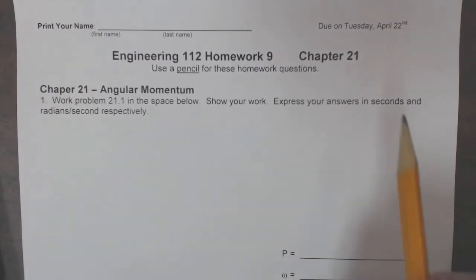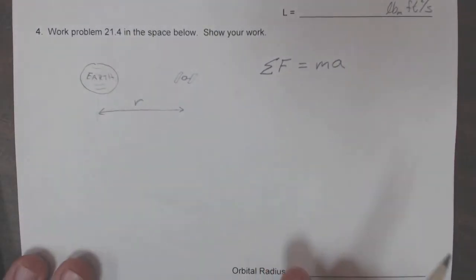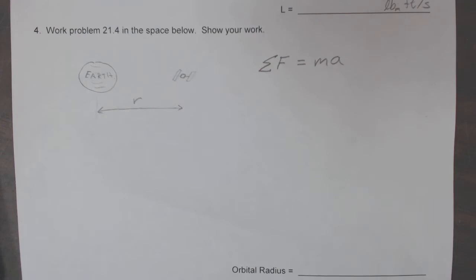All right, here we are, chapter 21, homework number 9, problem 4. This is problem 4 out of the back of the chapter as well, 21, about angular momentum and rotational motion.